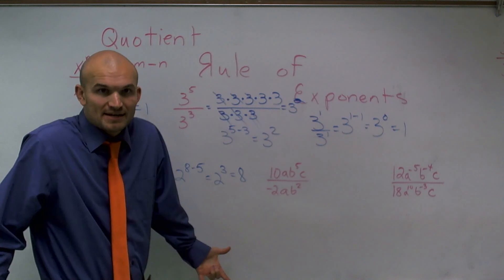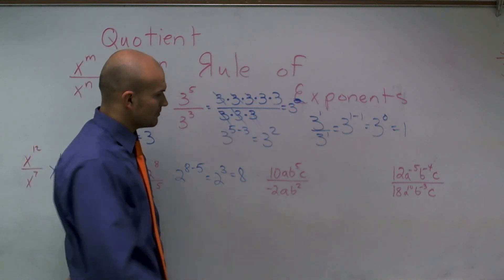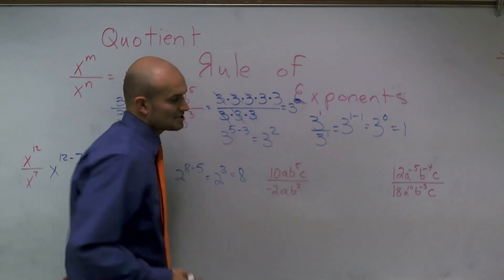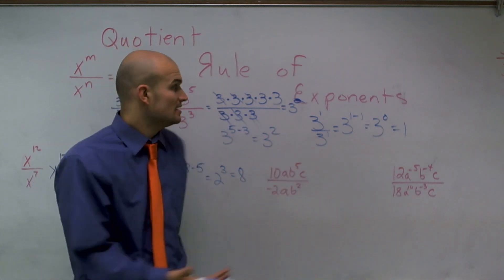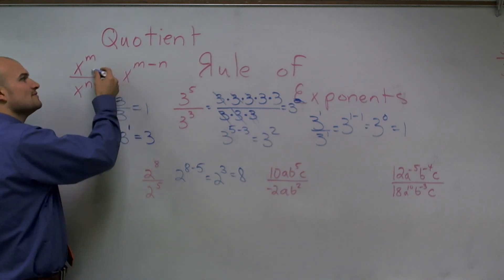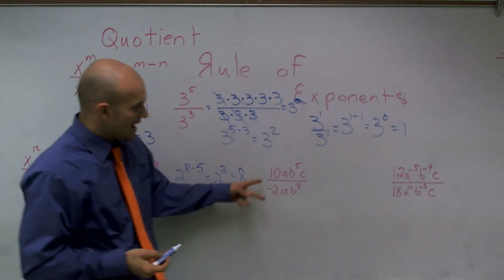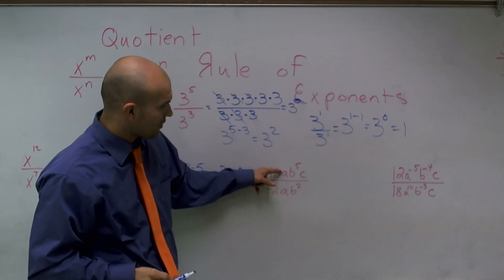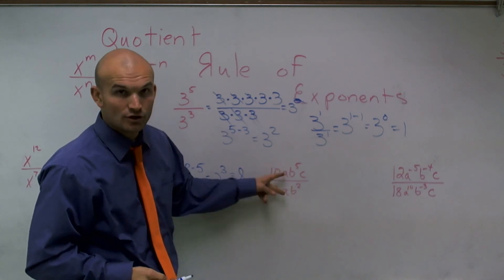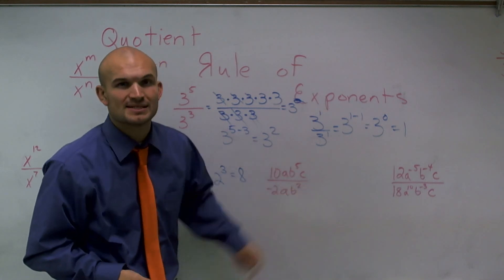Now we get a little bit more difficult. Now we have some problems where we have 10, a, b, and c — so we have multiple bases. Remember, I only told you that you can only subtract your exponents when you have the same base. So therefore, I can only work this for a divided by a — I can only subtract those exponents — and I can only subtract the b from the b and the c from the c.